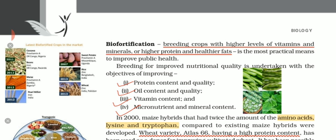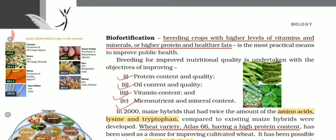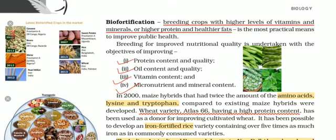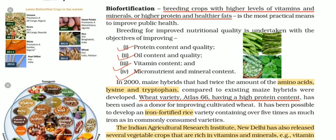Note down — healthier fats. There are two kinds of fats: saturated and unsaturated. Those fats which are healthier and can easily digest in our body are called healthy fats. The objectives behind biofortification are: number one, protein content and quality; number two, oil; number three, vitamins — A, B, C, D, E, and K; number four, micronutrients — those required in trace amounts — and the mineral content.